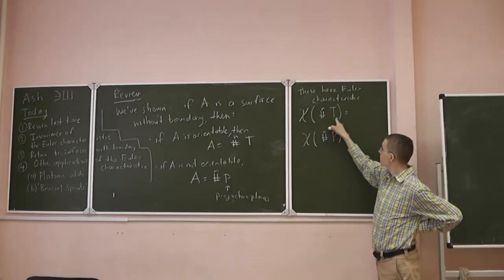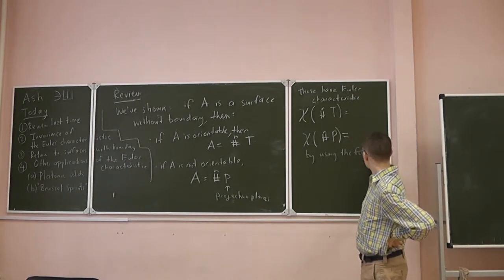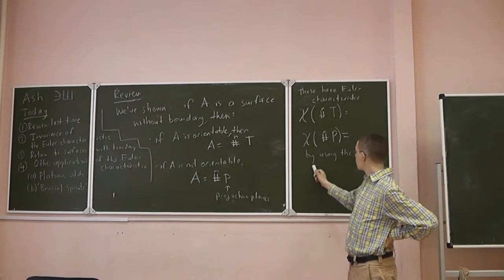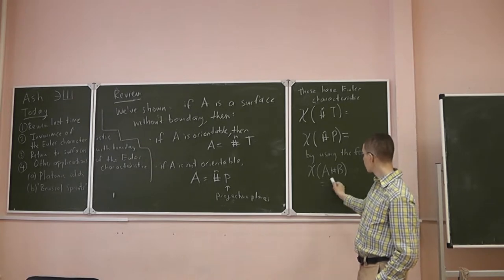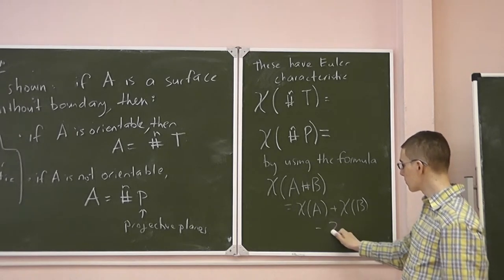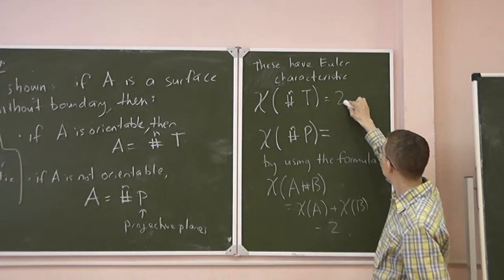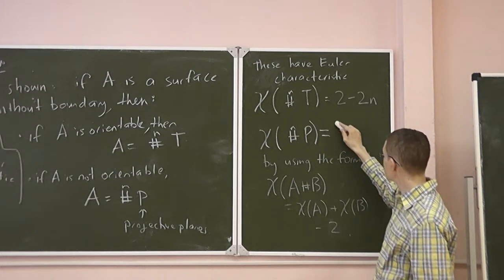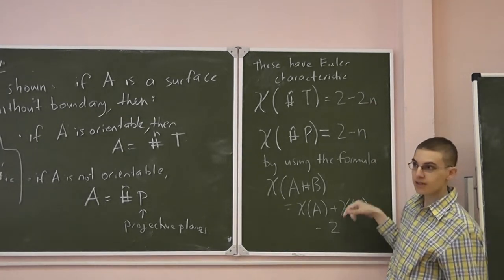So do you remember what formula we came up for these? It was faces minus edges plus vertices. That's the formula. 2 minus 2n. First I was going to ask the formula for the connect sum. That's the Euler characteristic of A plus Euler characteristic of B minus 2.